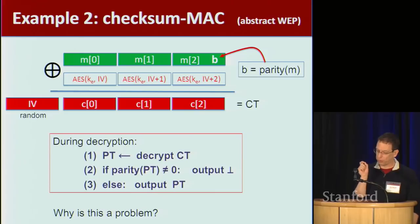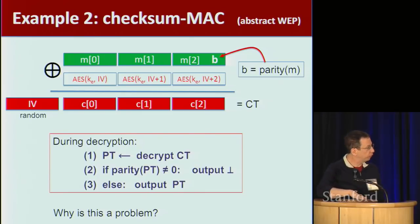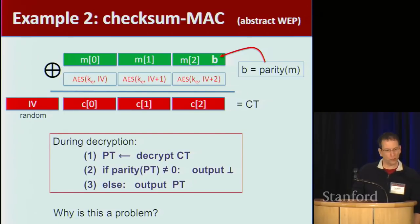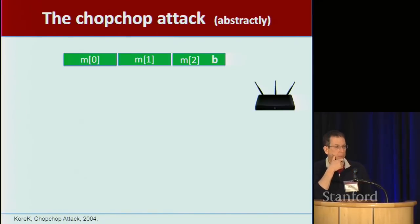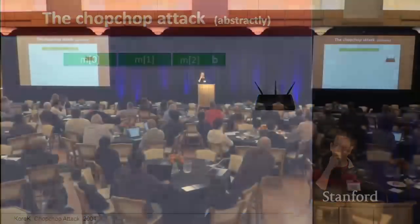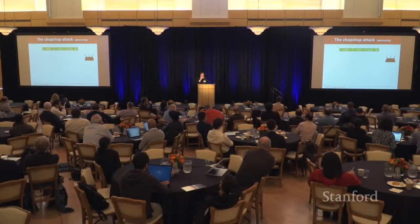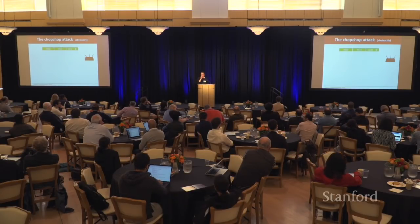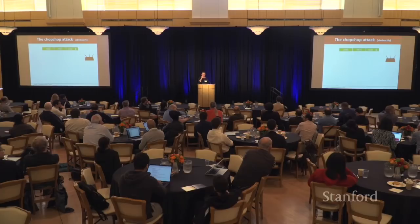There's actually a real attack here — it's not just about changing ciphertext. You can actually completely decrypt a ciphertext encrypted this way. Let's see how. I'll give you a hint: the attack is called a chop-chop attack. The idea is we're going to delete bits of the message. Imagine we delete the last bit of the ciphertext — literally just delete it. I record a ciphertext you sent, delete the last bit, and forward that to the router. What's the router going to do? It's going to try to decrypt this and compute a parity bit of the resulting plaintext.